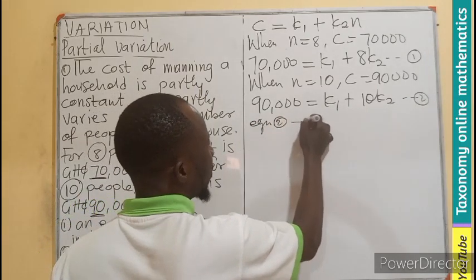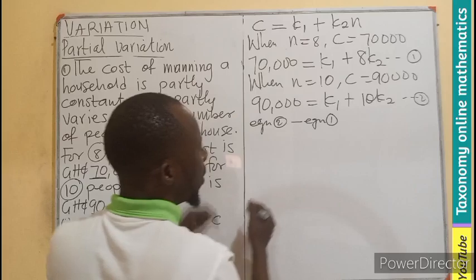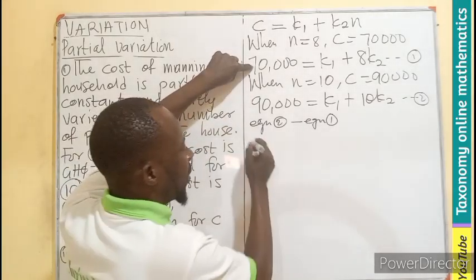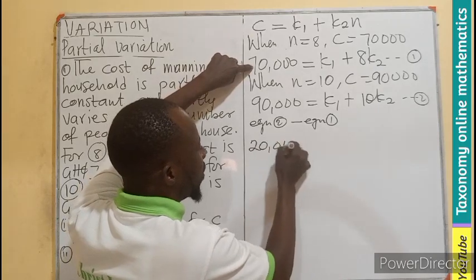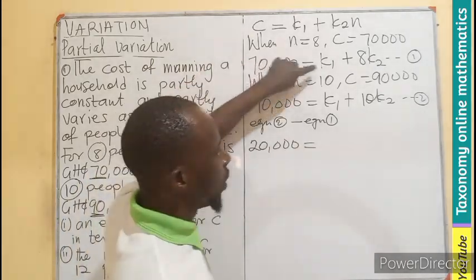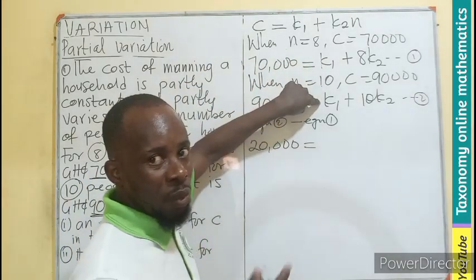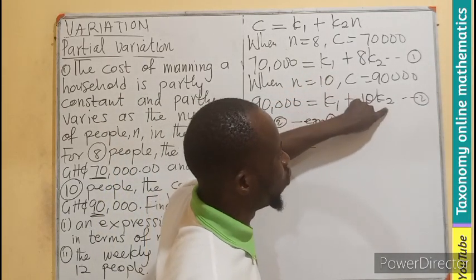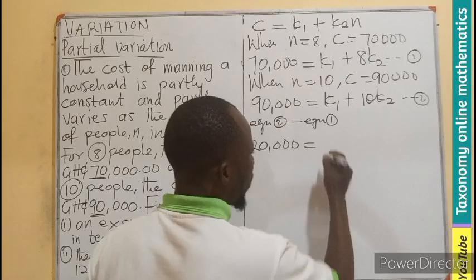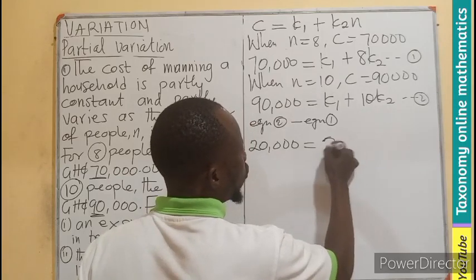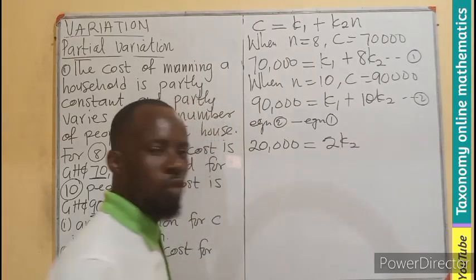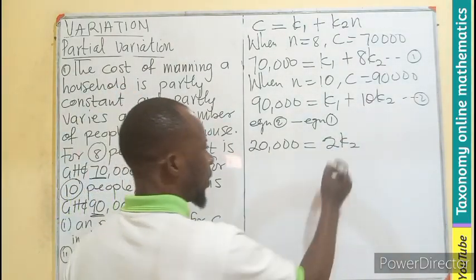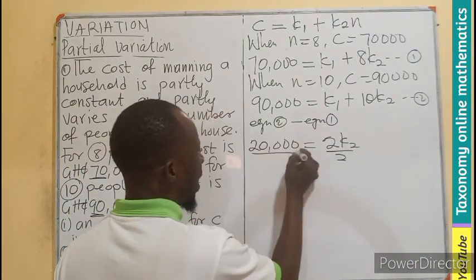Equation two minus equation one: 90,000 minus 70,000 gives us 20,000 equals k1 minus k1, which gives us 0. Now we have 10k2 minus 8k2, which gives us 2k2. We're looking for the constant of variation, so we divide by 2.